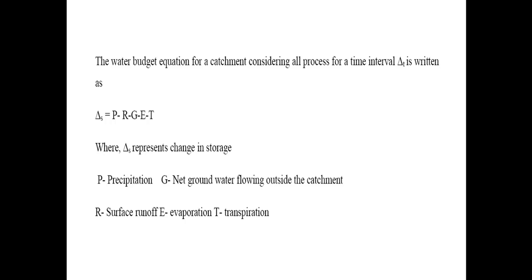Here, delta S represents the change in storage. P is the precipitation, R is the surface runoff, G is the net groundwater flow outside the catchment area, E is evaporation, and T is transpiration. To get delta S, the change in storage, we subtract surface runoff, net groundwater flow, evaporation, and transpiration from precipitation.